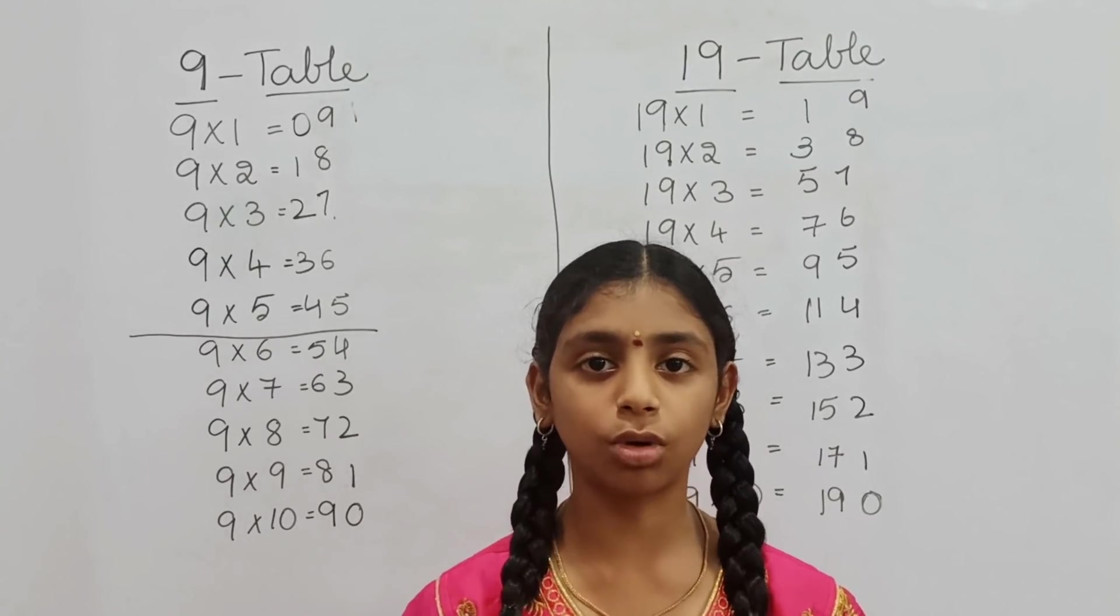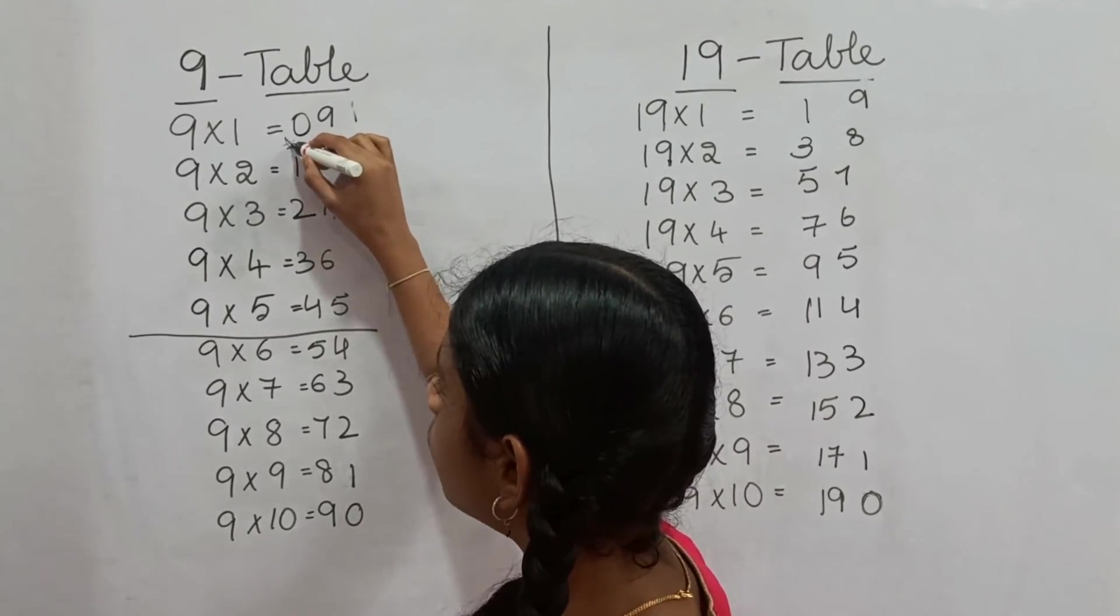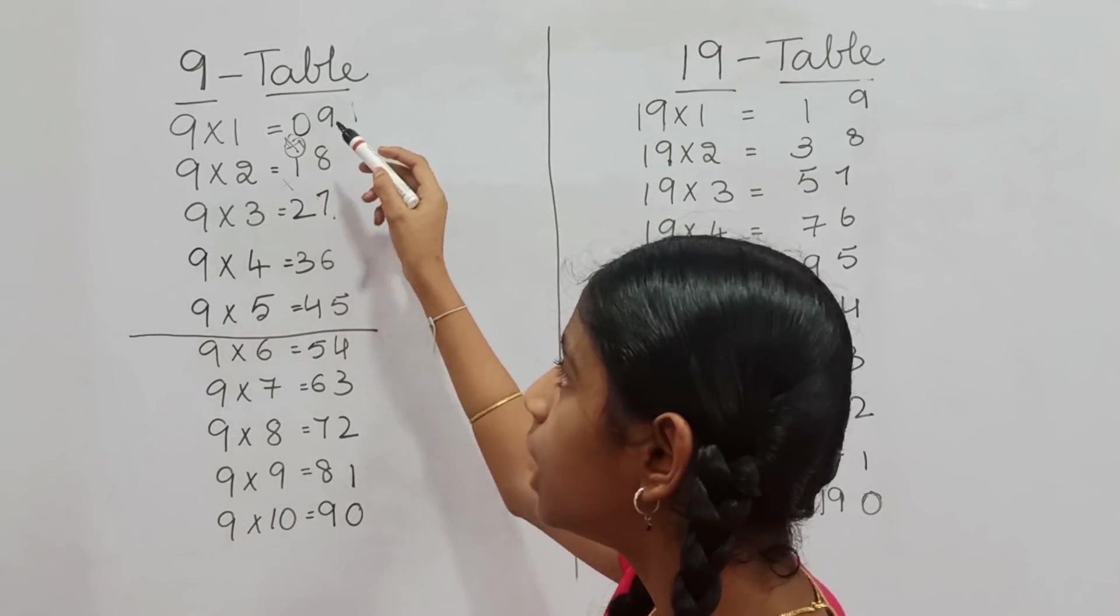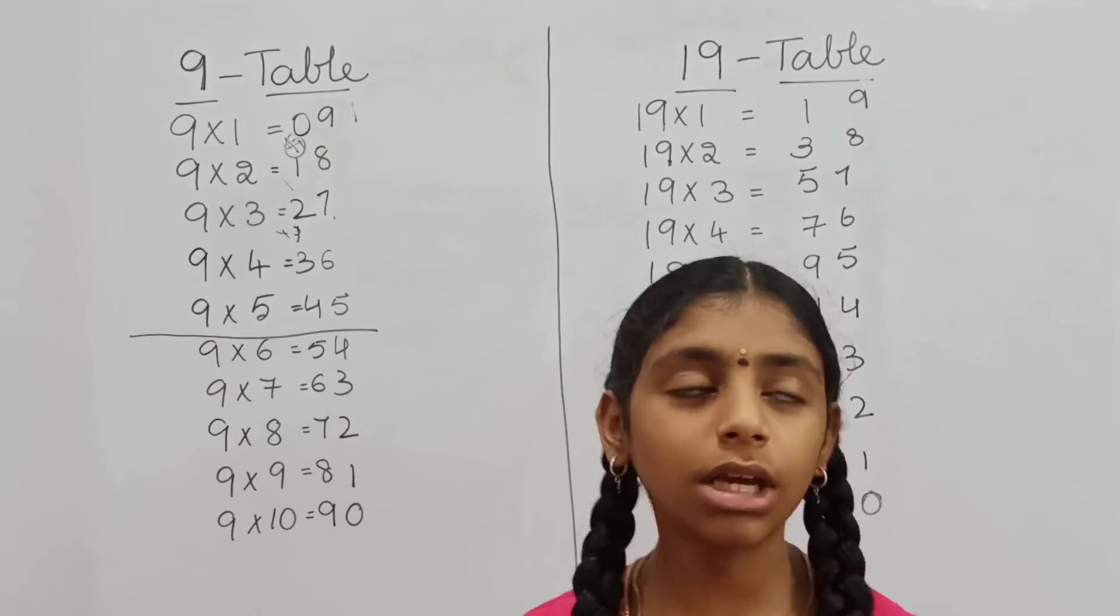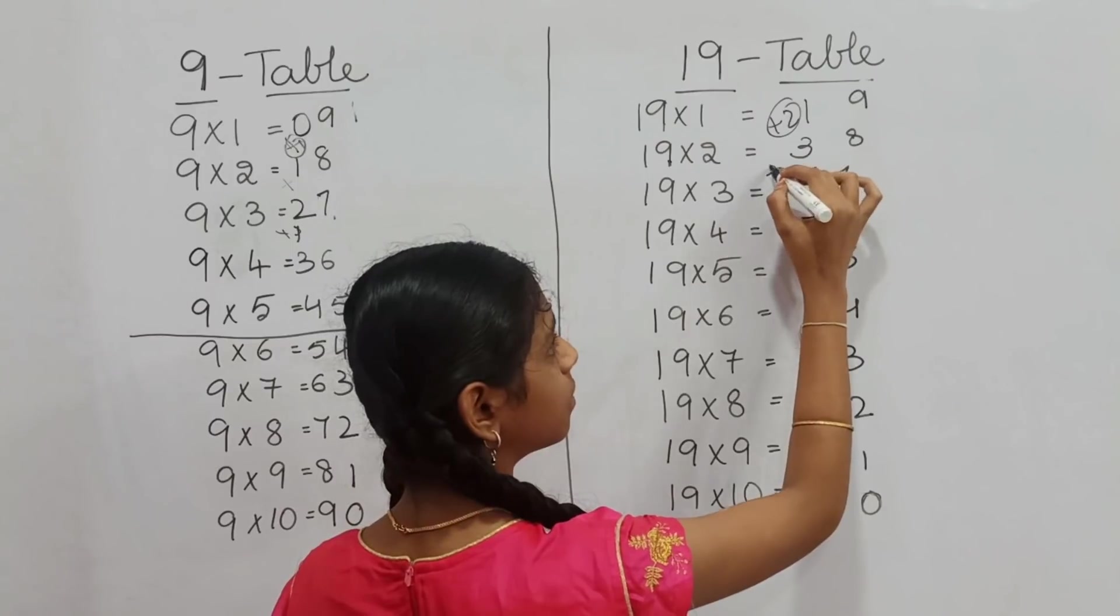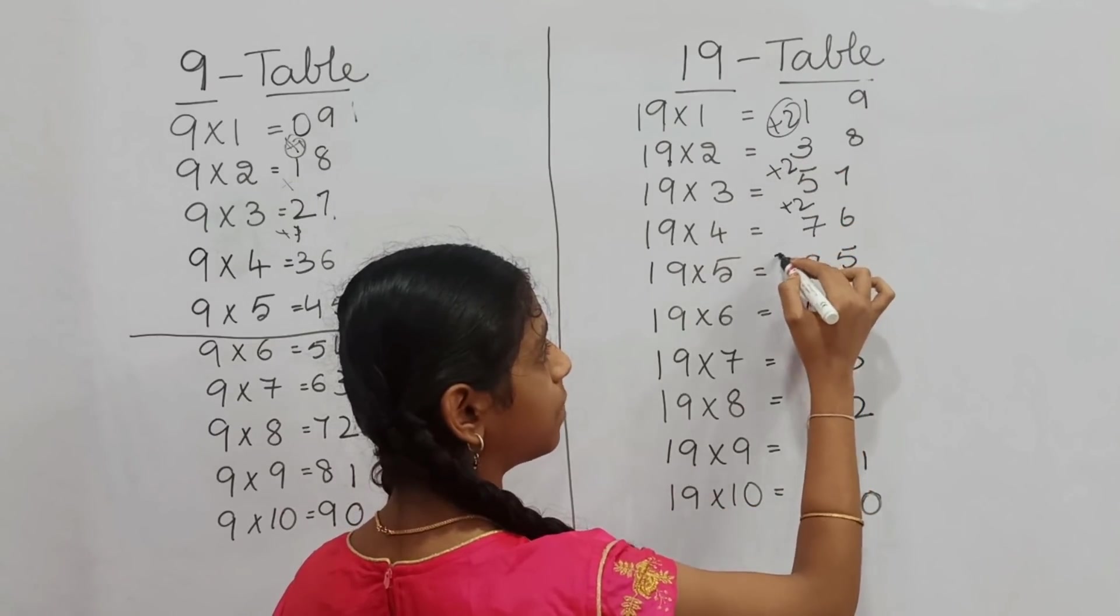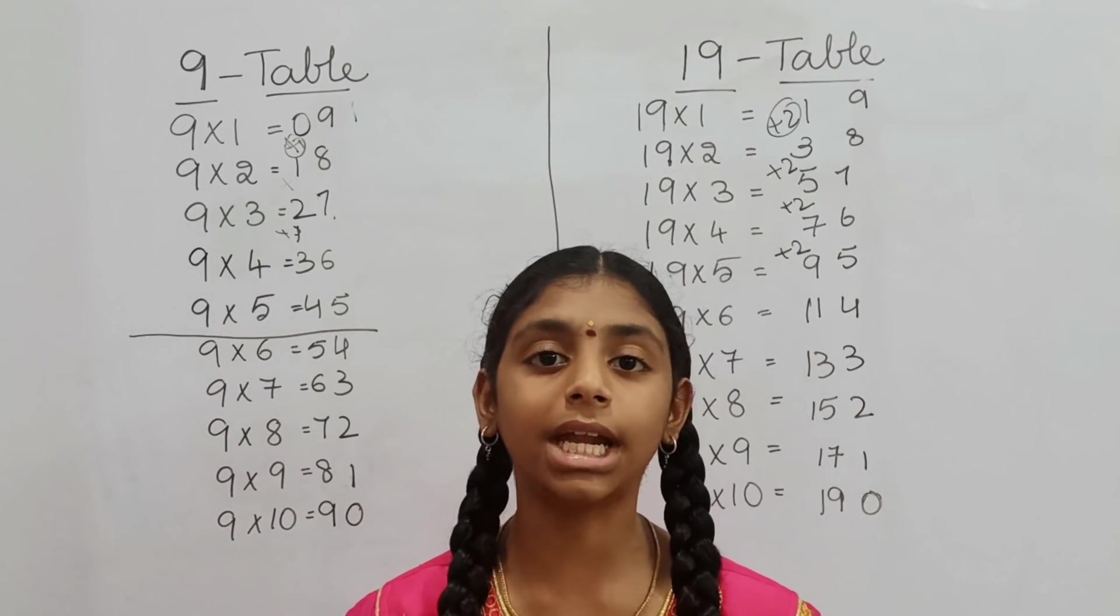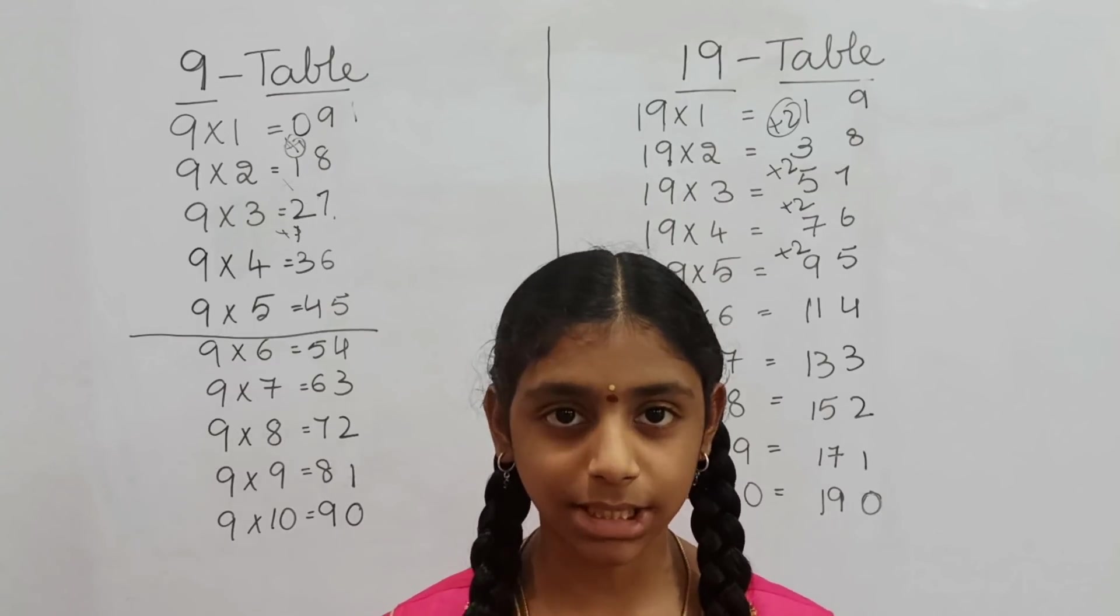I want to share another point with you all. In 9 table, if we add 1 to 0, we will get 1. If we add 1 to 1, we will get 2. If we add 1, we will get 3. Here, in 19 table, if we add 2, we will get 3. Plus 2 is 5, 5 plus 2 is 7, 7 plus 2 is 9. This trick, we can use for the tables ending with 9, for example 29, 39, 49, etc.